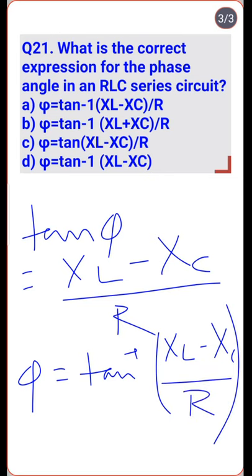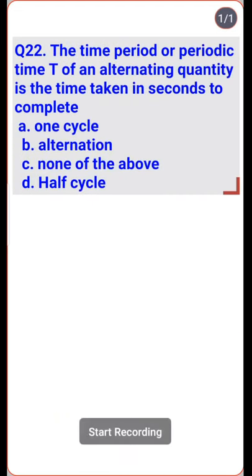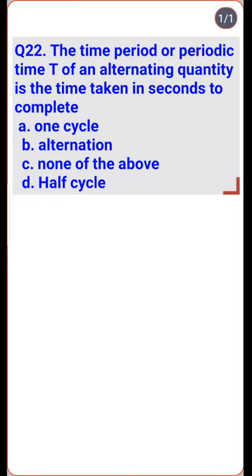The time period or periodic time T of an alternating quantity is the time taken in seconds to complete one cycle — so option A is the right one.